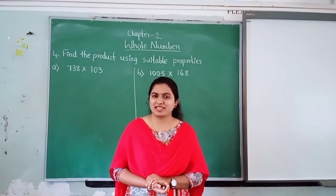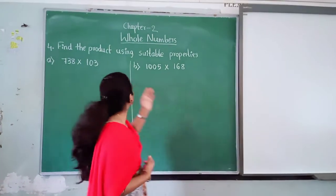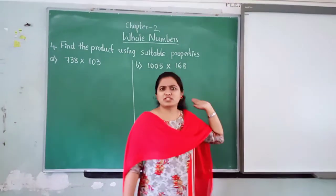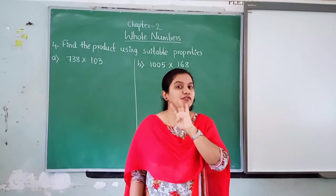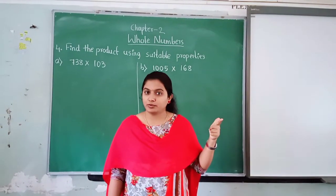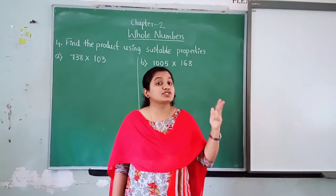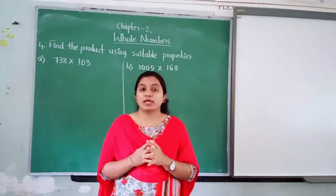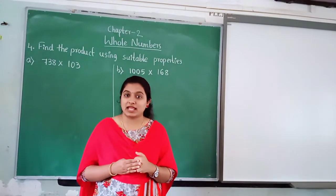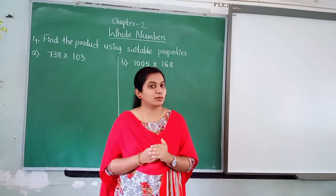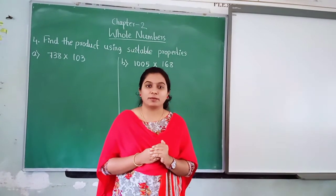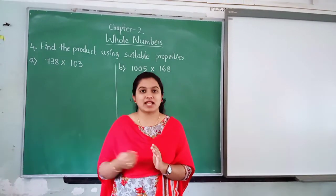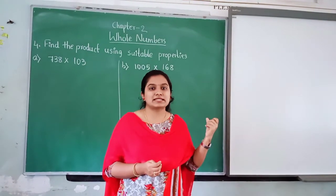Today I am going to teach one more new topic - find a product using suitable properties. In your whole number chapter there are four properties: closure property, commutative property, associative property and distributive property. I have not taught your children these four properties. Why? Because the government has decided to delete that topic. These properties you are going to learn in seventh standard again. Here only I will explain how to do the sum.